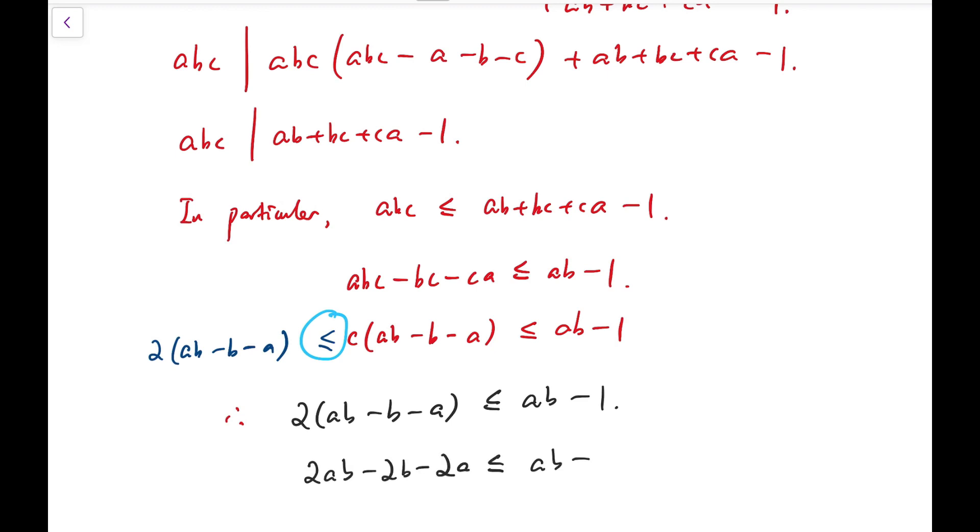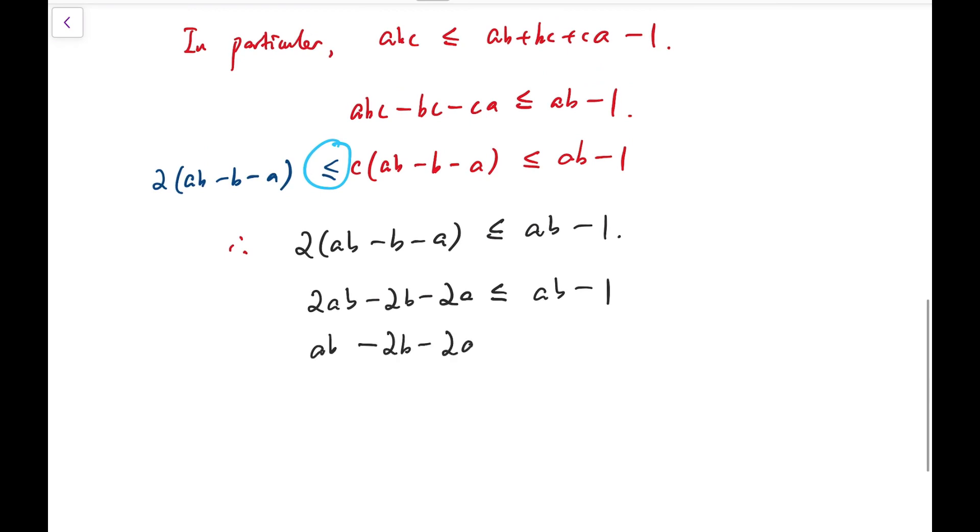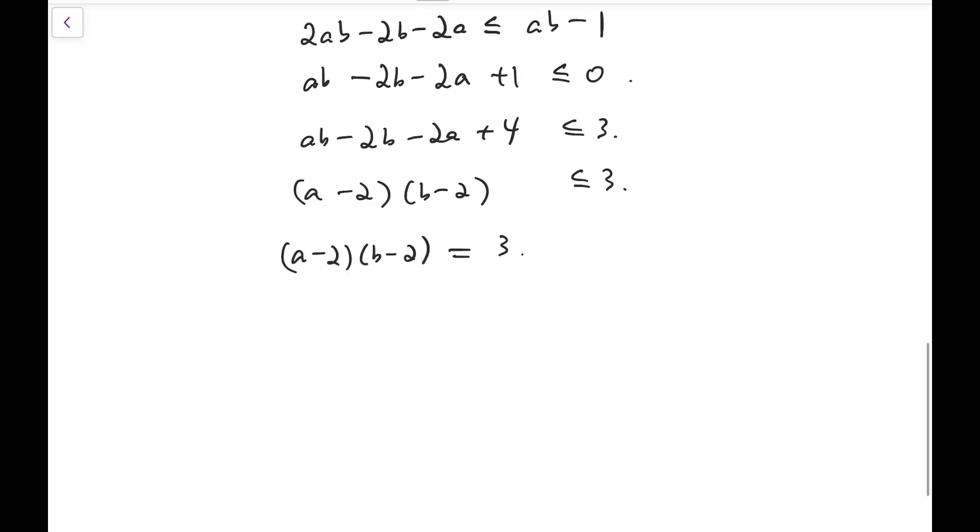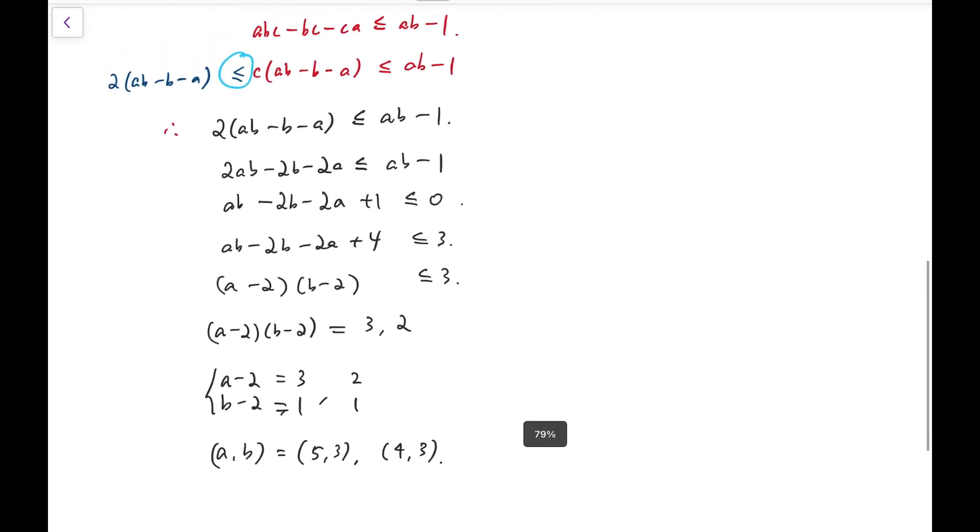two times AB minus B minus A is at most AB minus one. Now, when we're trying to solve this, AB minus 2B minus 2A plus one is less than or equal to zero. I'm going to add some numbers on both sides to make the left-hand side factorizable. And so, now with this inequality, I can say that the product is under three or two. In fact, it cannot be one because if the product is one, then both A minus two and B minus two have to be one, and so this will contradict the inequality of A and B. So, that means A minus two and B minus two has to be three or two. And so, we have three, one, or two, one. And that means AB are either five and three or four and three.